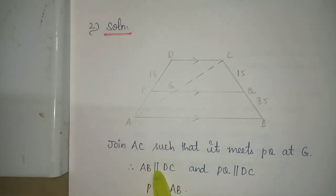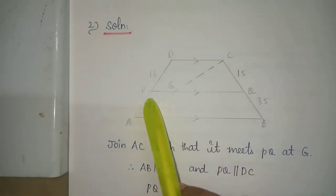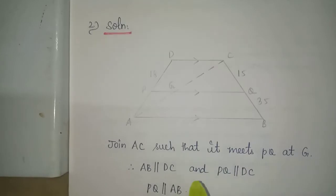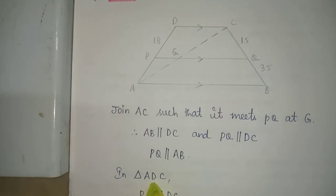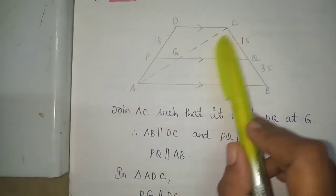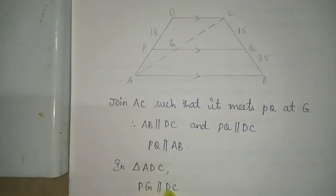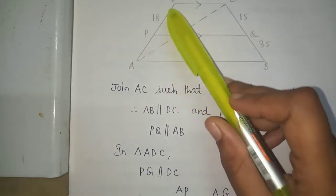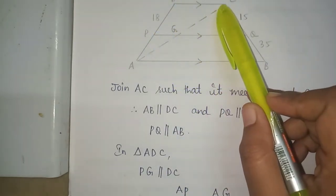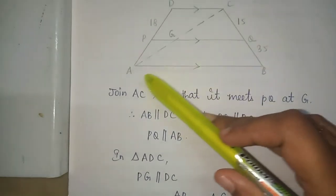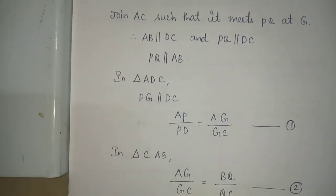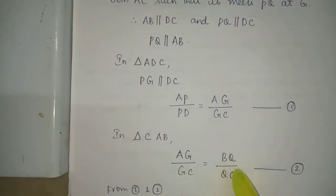Since AB is parallel to DC and PQ is parallel to DC, we have PQ parallel to AB. In triangle ADC, PG is parallel to DC, so by basic proportionality theorem: AP by PD is equal to AG by GC — equation 1. Similarly in triangle CAB, AG by GC is equal to BQ by QC — equation 2.